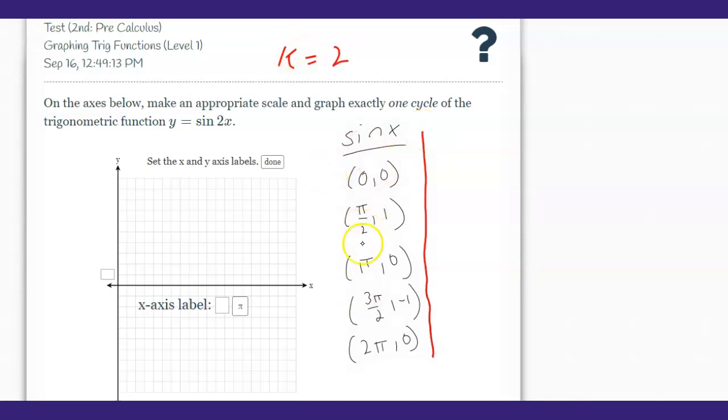We're going to multiply all these x values by the inverse of k. The inverse of k is one half, so all these x values get multiplied by one half. Zero times one half is zero.